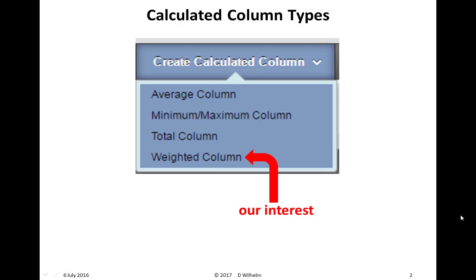Here's a screenshot from Blackboard. There are four calculated column types: an average column, a minimum/maximum column — I've never used either of those. There is a total column which seems to be populated automatically in our courses, which I have found totally useless and confusing. What we are interested in is the weighted columns.